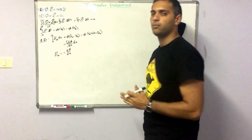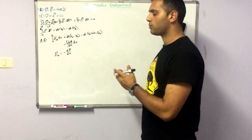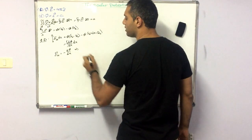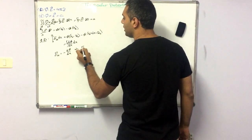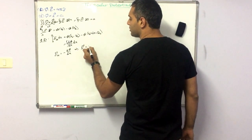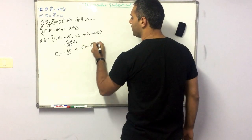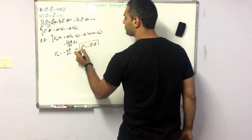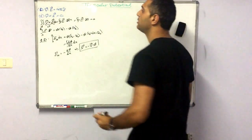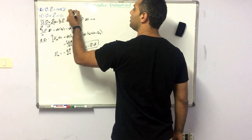If we do the same procedure for y and z, we get the same result. So from here we get that the electric field equals minus the gradient of φ. This is a very important result.